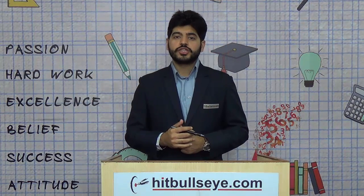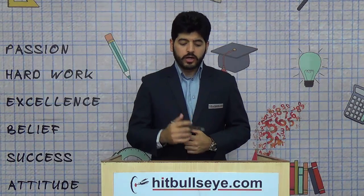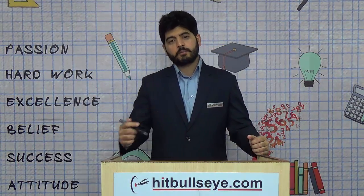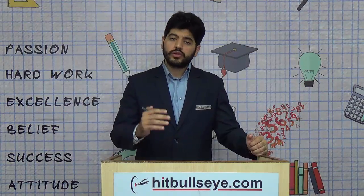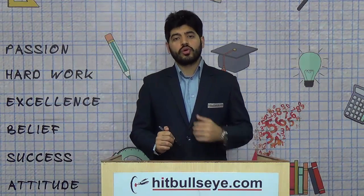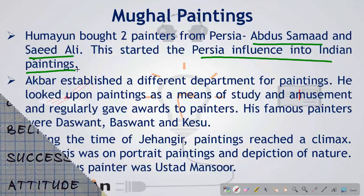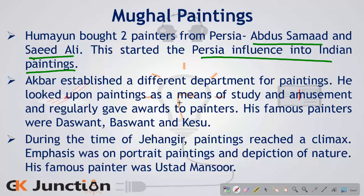After Humayun there was Akbar, who established a separate department devoted solely to painting. He looked upon painting as a means of study and amusement and gave awards to painters in his court. He had three very famous painters by the name of Daswant, Baswant, and Kesu.